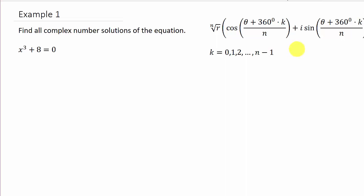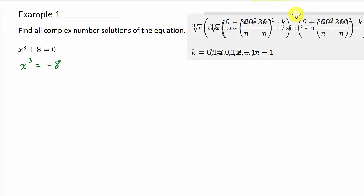And I've got the formula here. So it says find all complex number solutions of the equation. I've got x cubed plus 8 equals 0. The first thing we want to do is we want to solve this thing for x cubed. And that equals negative 8. Now remember what this said. I'm going to move this over. I just see now that it's kind of cutting it off.